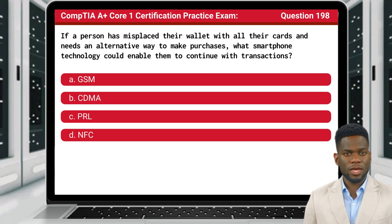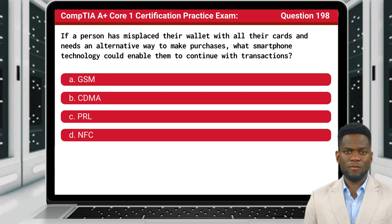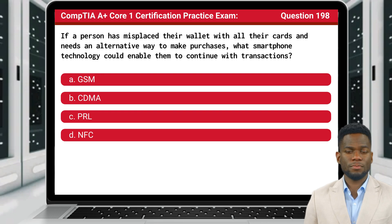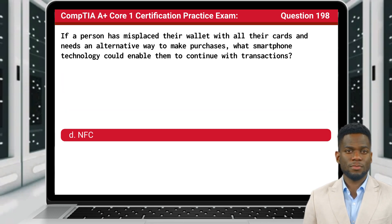Question 198. If a person has misplaced their wallet with all their cards and needs an alternative way to make purchases, what smartphone technology could enable them to continue with transactions? The answer is D: NFC.